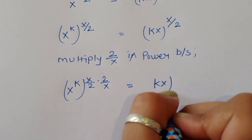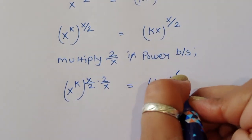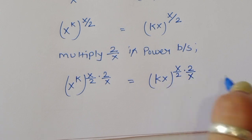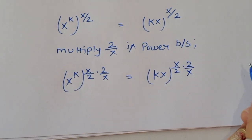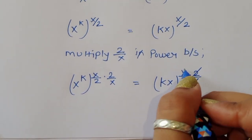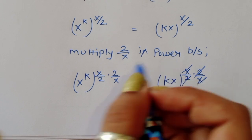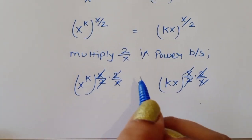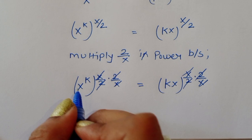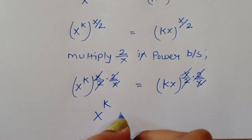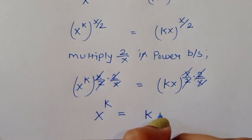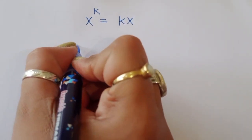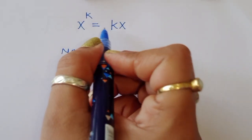Multiplying the power 2/x on both sides: the 2 cancels with 2, and x cancels with x on both sides. On the left-hand side we get x^k raised to the power k, and on the right-hand side we get kx. So x^k · k is equal to kx.